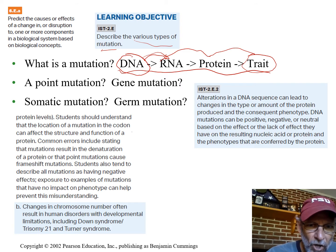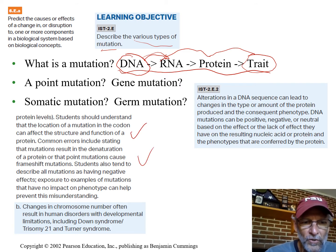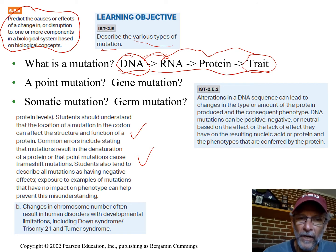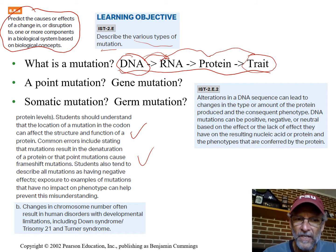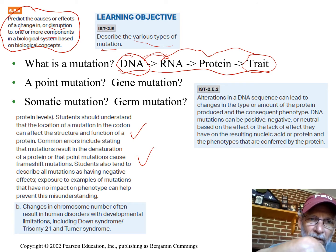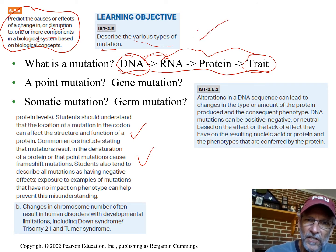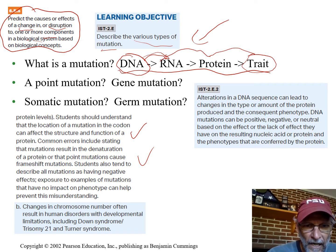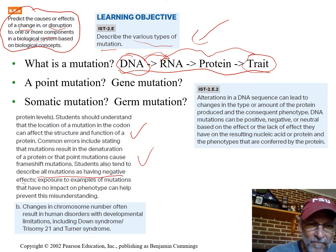They talk about some common errors that students make. One of their favorite things to test is: can you take your knowledge of concepts and tell us what would happen if we changed or disrupted some component of a biological system — in this case, the system of information exchange that involves the central dogma.